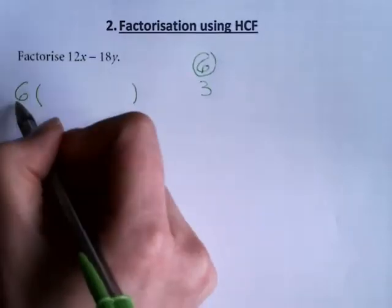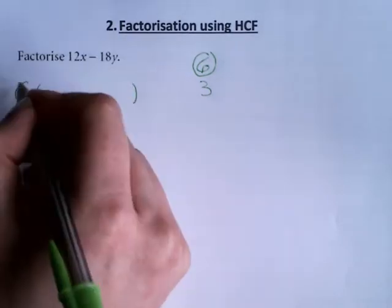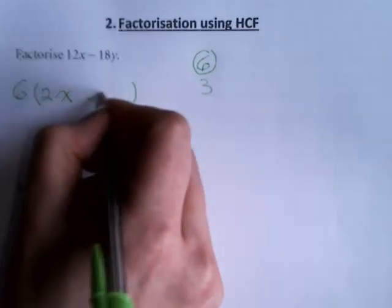Now, 12x divided by 6, I will end up with 2x, negative 18y divided by 6 is negative 3y.